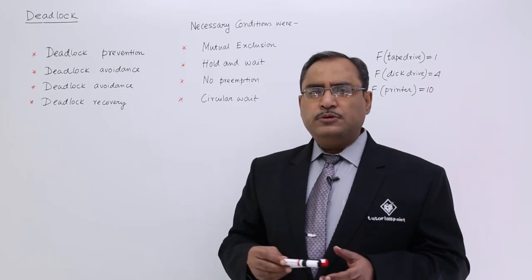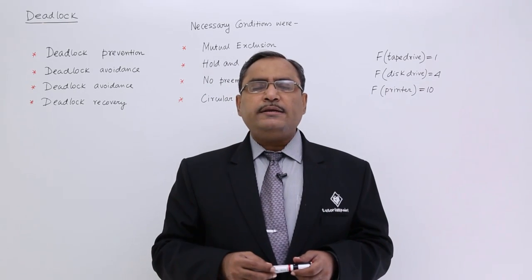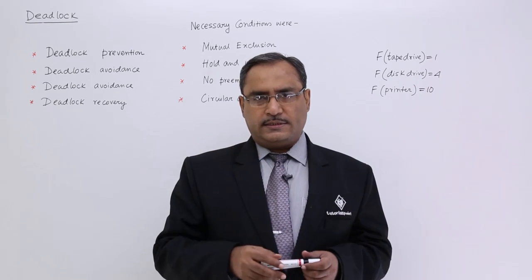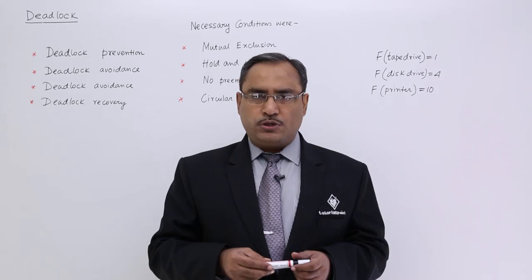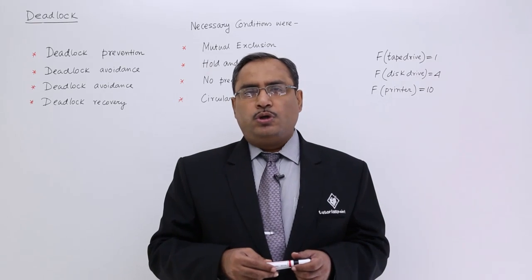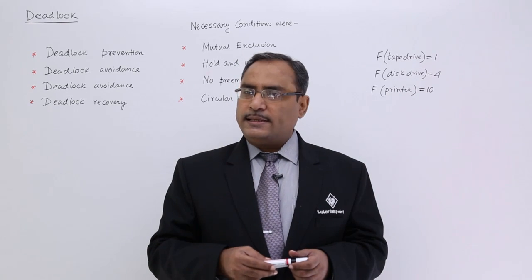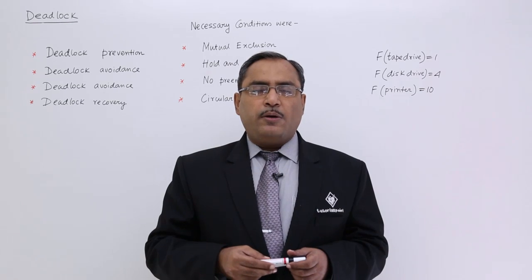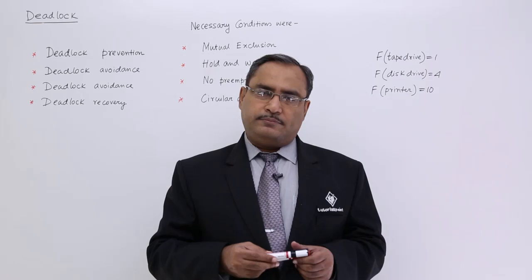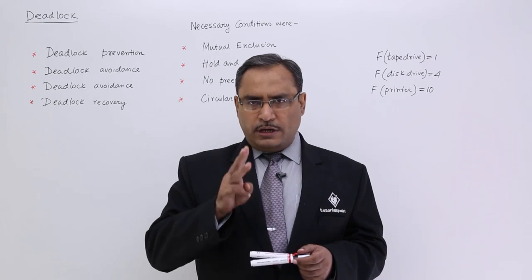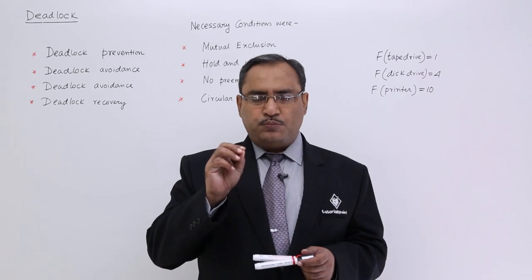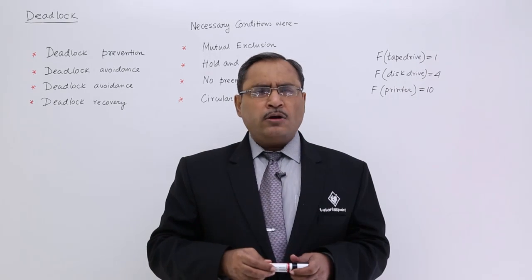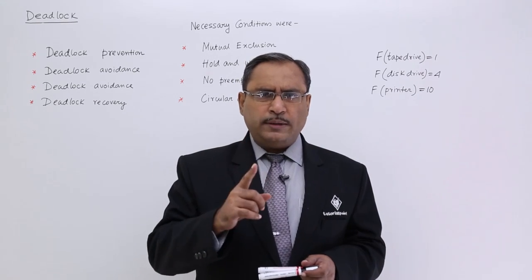Deadlock prevention — let us suppose my exam score can be bad for three different reasons. Reason number one: my preparation was not good. Reason number two: out-of-syllabus questions came. Reason number three: I was ill on the date of my exam. Now there are three causes for which I can have a poor score. I cannot resolve all of them, so let me resolve at least one of them.